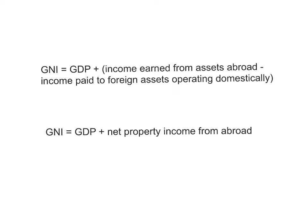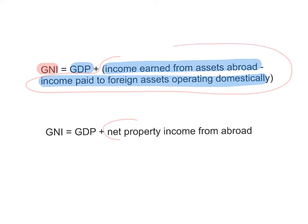So how do we calculate GNP or GNI? Basically, GNI is equal to GDP plus all the income earned from assets owned abroad, minus all the income paid to foreign assets operating domestically. You add any income earned from your foreign assets, and you subtract any income paid to foreigners who own assets within your country. This bracket — income earned from assets abroad minus income paid — we call that net property income from abroad. So GNI equals GDP plus net property income from abroad.